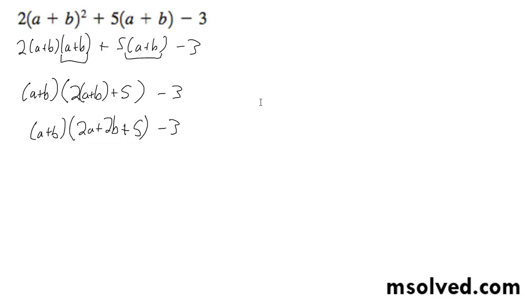So continuing on here, we end up with 2a squared plus 2ab + 5a + 2ab + 2b squared + 5b - 3.